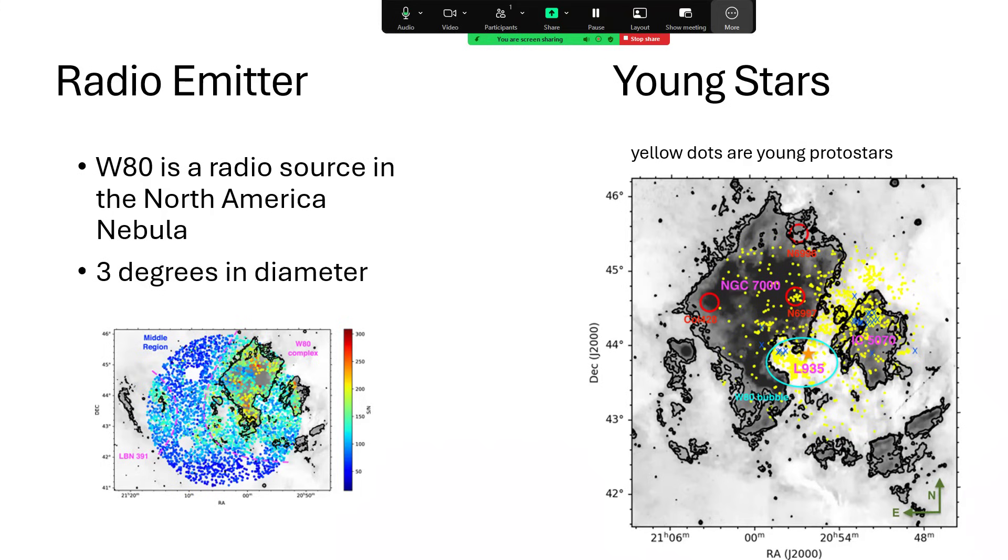Somewhere in that blue ellipse on the right, that's the W80 bubble, so the emitter is in that region again possibly obscured from our line of sight by the cloud. Just to add to it all, those little yellow dots are young protostars that have been formed within the nebula, so this has been a prodigious source of new star formation within the galaxy.